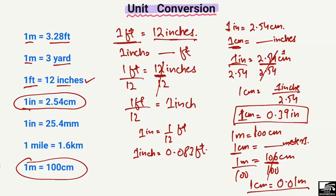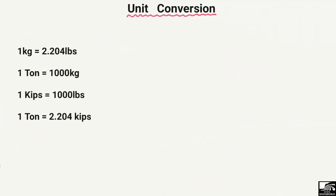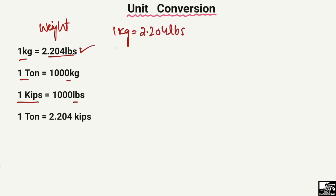Similarly, here we have some weight units. 1 kg is 2.204 pounds, 1 ton is 1000 kg, and 1 kip (kilopound) is 1000 pounds. For example, we know that 1 kg equals 2.204 pounds, but how many kg are there in 1 pound? In the same way, we want to find out the value for 1 pound.